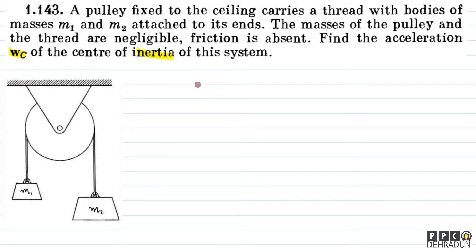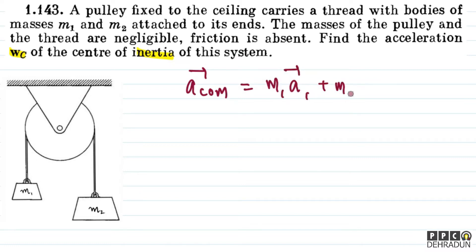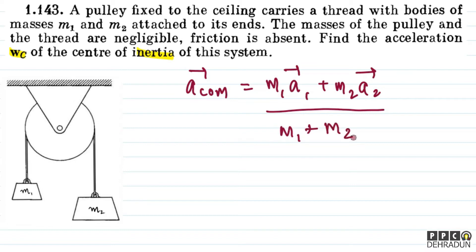The first thing we know is the acceleration of the center of mass. What is the formula? It is M1·A1 vector plus M2·A2 vector — that is the formula we will use.